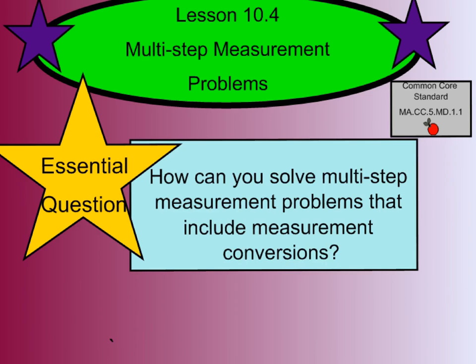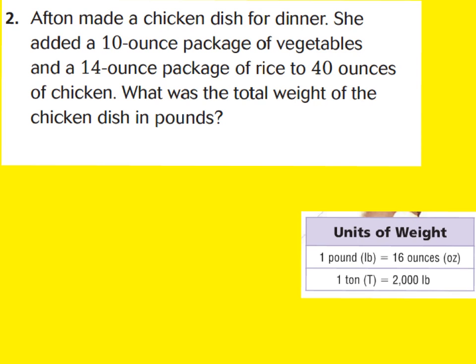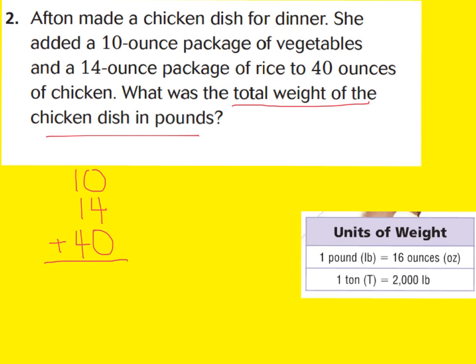Go ahead and turn in your GoMath book to Lesson 10.4. Let's take a look at question number two. Question number two says: Afton made a chicken dish for dinner. She added a 10-ounce package of vegetables and a 14-ounce package of rice to 40 ounces of chicken. What was the total weight of the chicken dish in pounds? So what we know is we have 10 ounces of vegetables, 14 ounces of rice, and 40 ounces of chicken. Let's add that all up to find our total ounces.